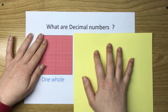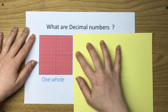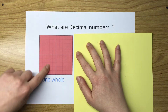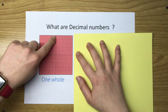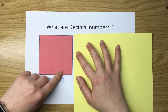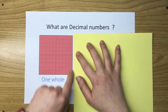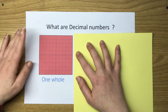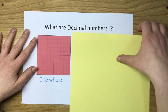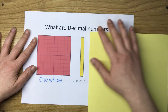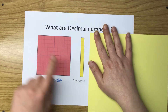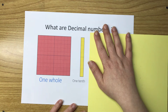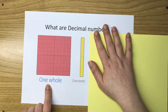This is one whole — one unit. If I decided to cut this one whole into ten equal parts, one through ten, each part of these ten parts is going to be called one tenth. Why is it called one tenth? Because it's one part of ten from the one whole.